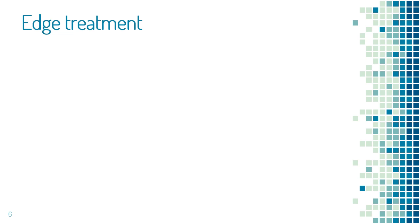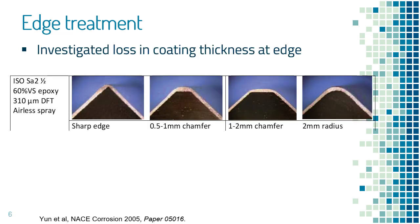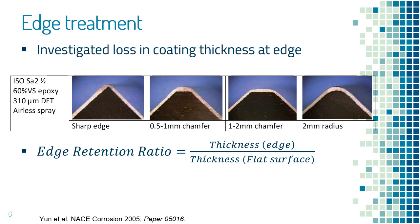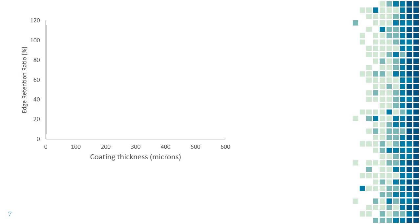To show the value of a chamfer, we can refer to work done by Korean researchers on the effect of different edge treatments on local coating thickness. Using a solvent-borne epoxy, they looked at a sharp edge, chamfers and a radius. They measured the coating thickness on the corner as a percentage of that in the flat regions — known as the edge retention ratio — and plotted this as a function of film thickness. For a sharp edge, coverage improved with thickness, but even a thick coating had considerable loss at the edge.